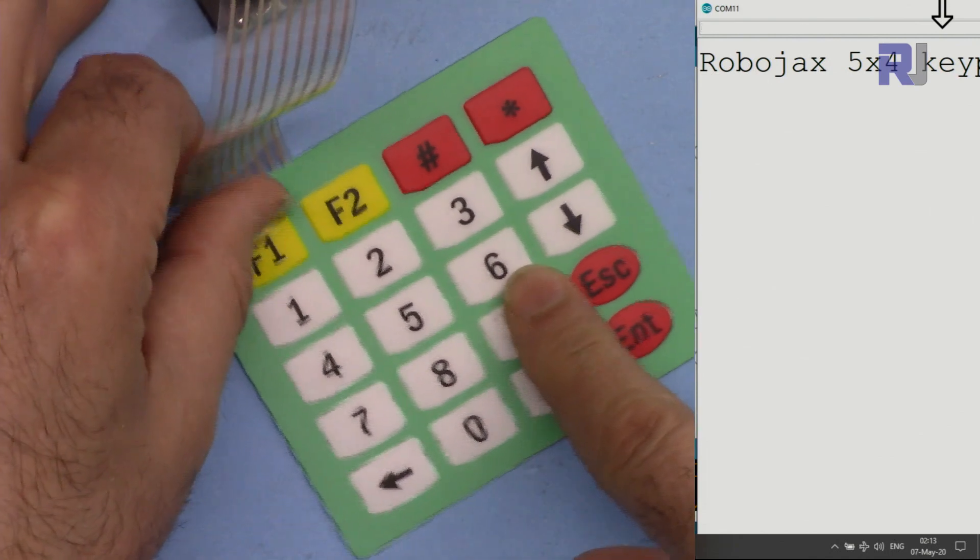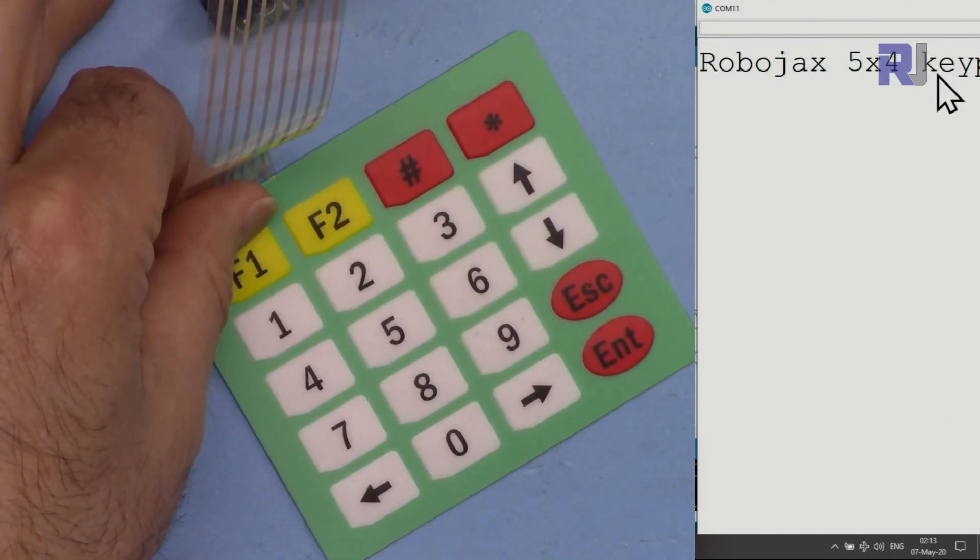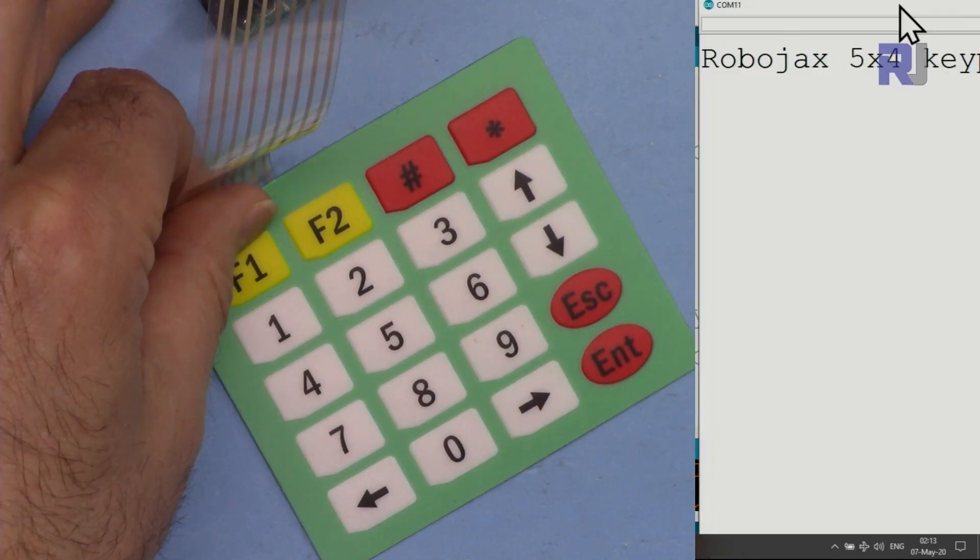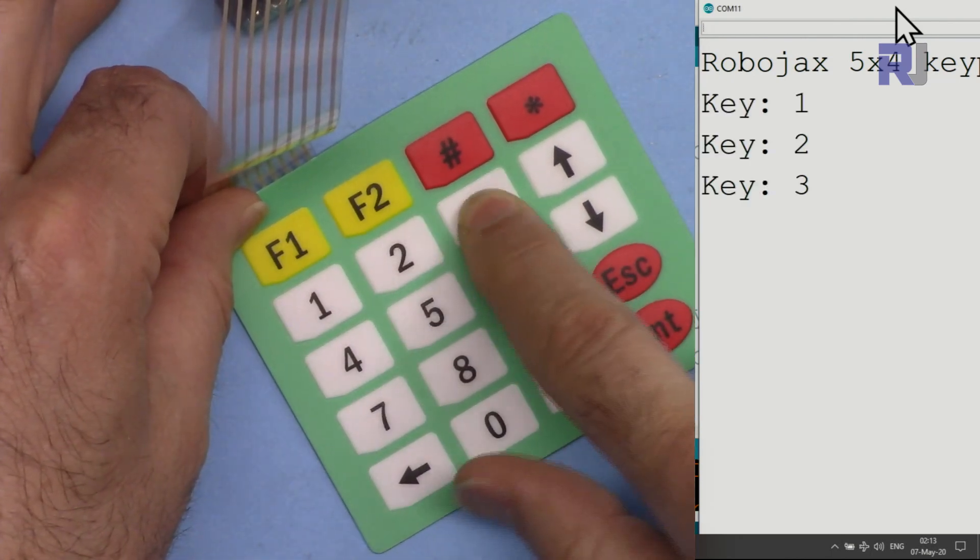And here is a demonstration. When you run the code initially it just prints this Robojax 5 by 4 key. I just move this so you can see the other portion of the video better. And here I'm pressing 1, 2, 3.